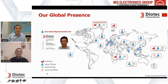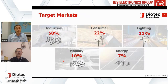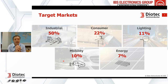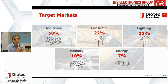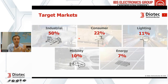The target market for DioTec covers five segments. Industrial applications — with customers like Siemens, ABB, Rockwell, Cooper — represent 50% of our turnover, where reliability and quality are very important. Then 22% is in consumer, meaning we must also be competitive on price — otherwise consumer is an extremely difficult market to penetrate.